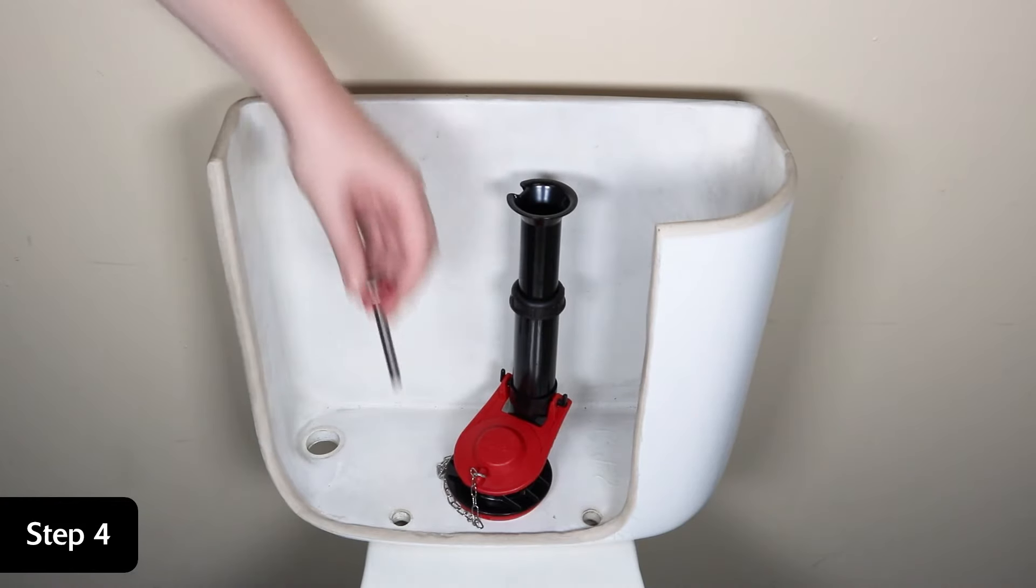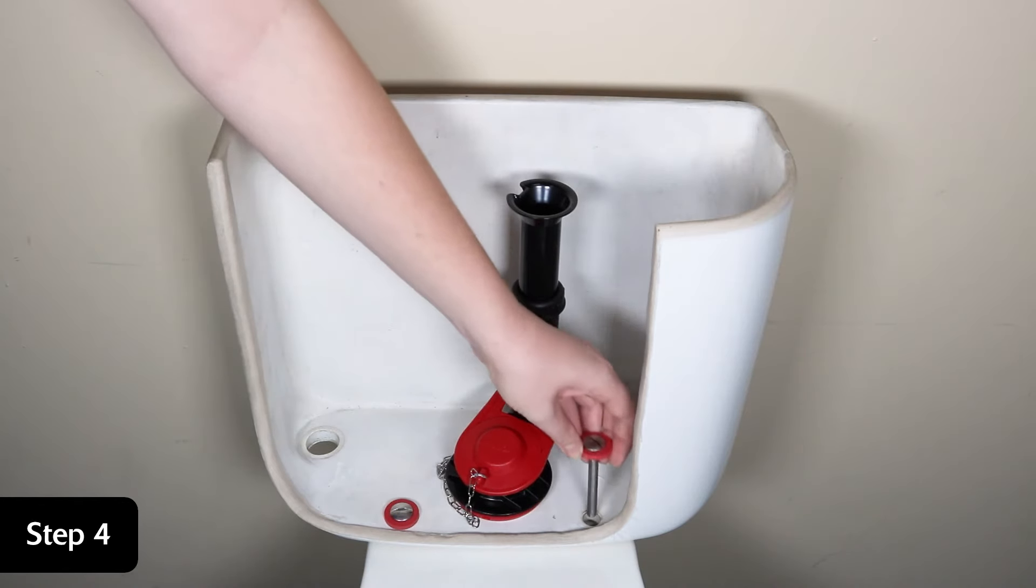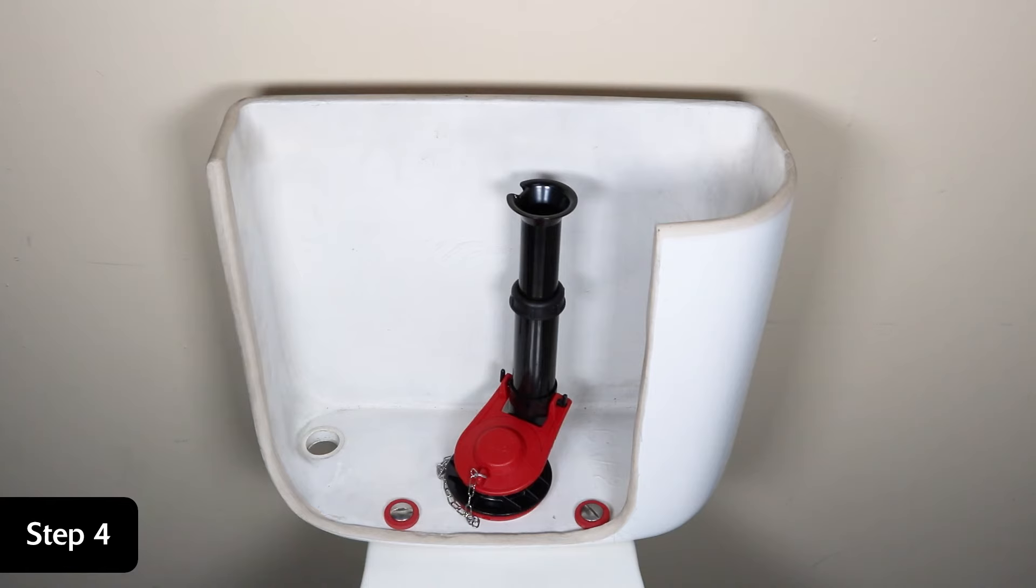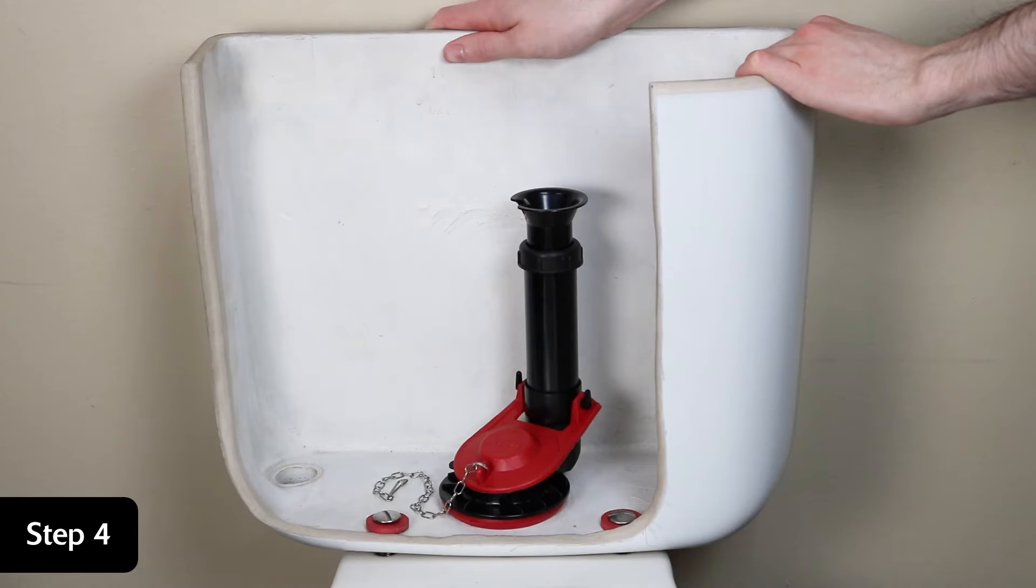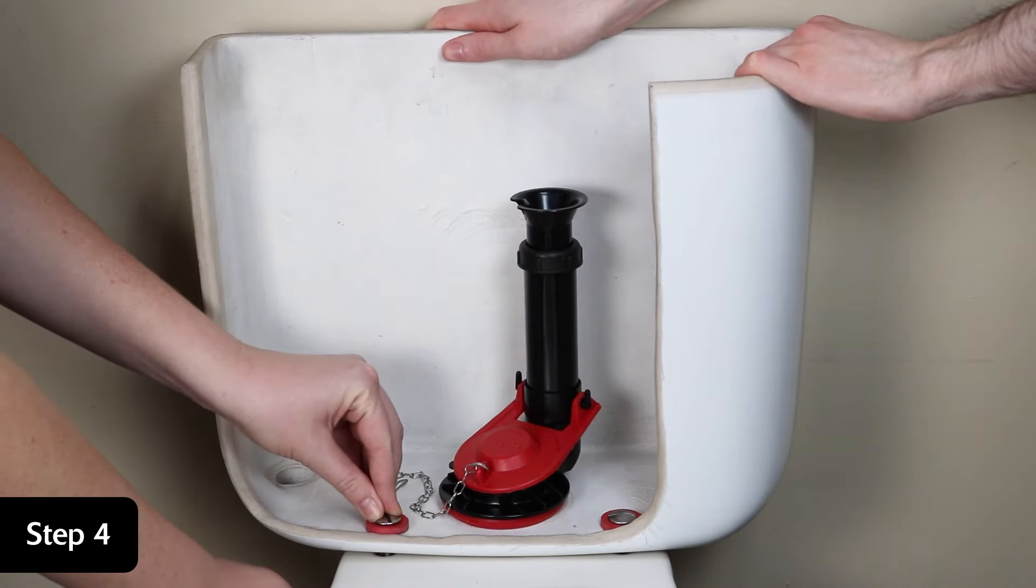Use the new bolts, rubber washers, washers, and hex nuts included in the packaging to attach the tank to the bowl. It may be helpful to have a second person apply downward pressure to keep the tank level as you tighten the nuts in an alternating fashion.